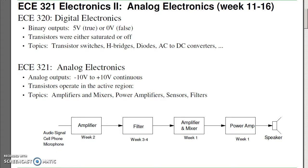In this class, ECE321 Analog Electronics, we have analog outputs. Typically the voltage will be something like minus 10 to plus 10 volts continuously. Here, the transistor can be operating in the active region, and the topics we'll be covering include amplifiers, mixers, power amplifiers, sensors, filters, and so on.